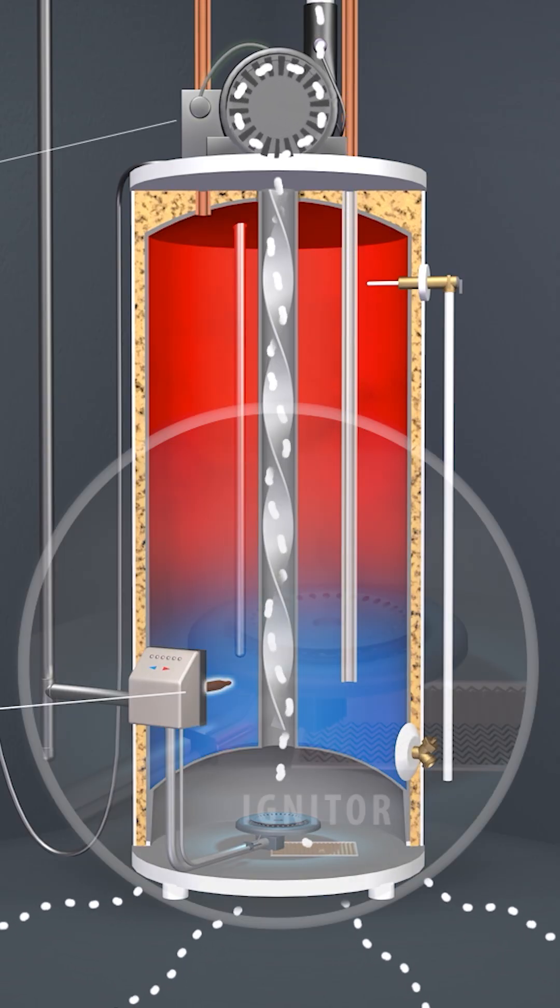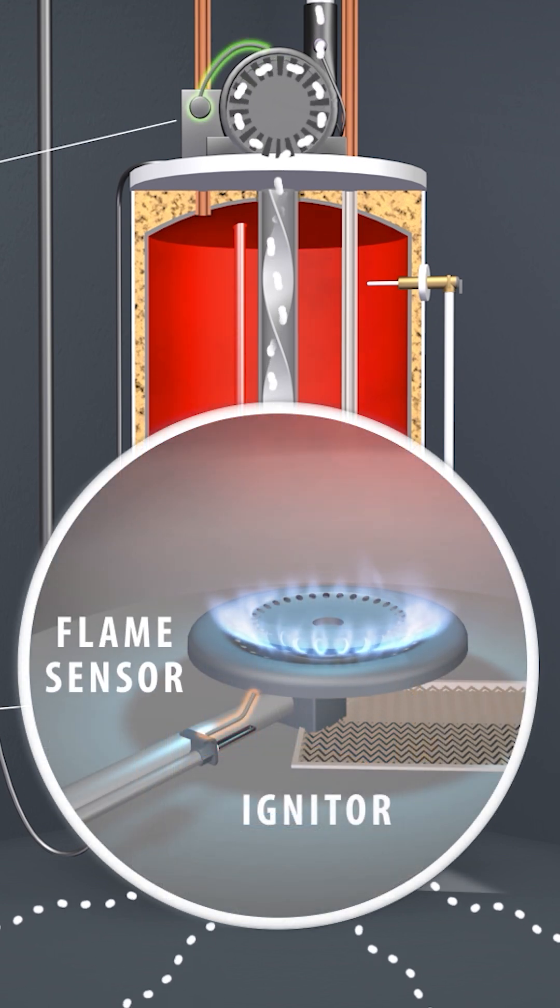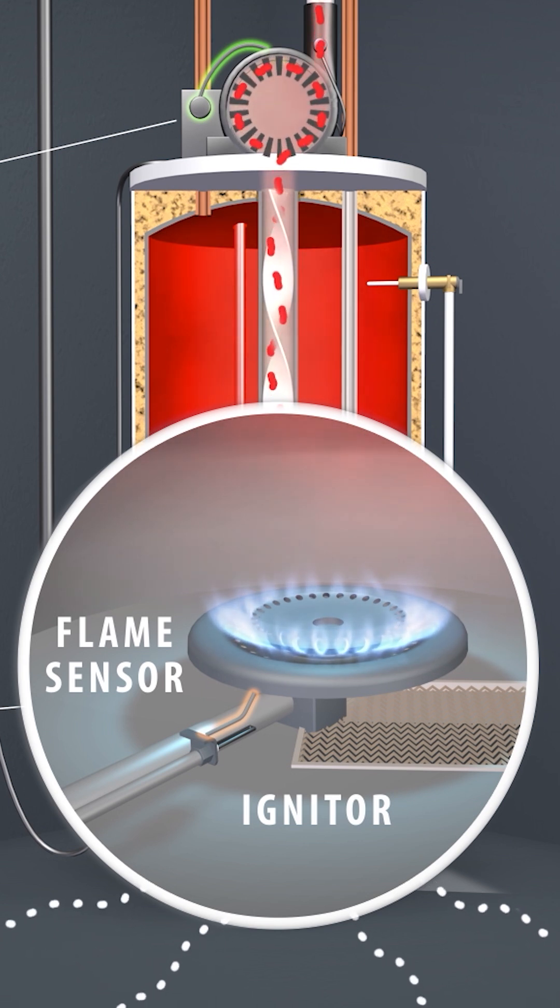High efficiency furnaces and power vent water heaters use a hot surface igniter. A flame sensor or flame rod monitors the burner. It doesn't produce any voltage, but will verify if there's a flame.